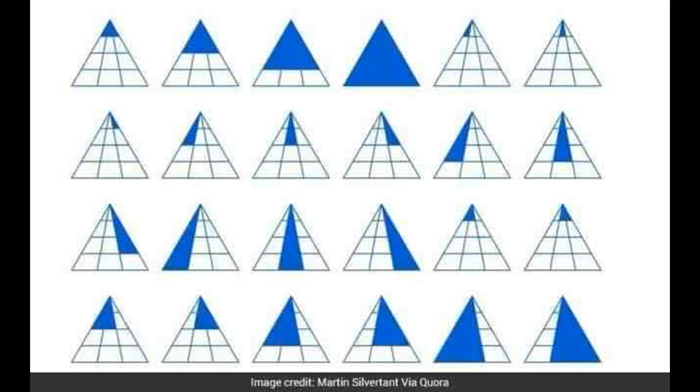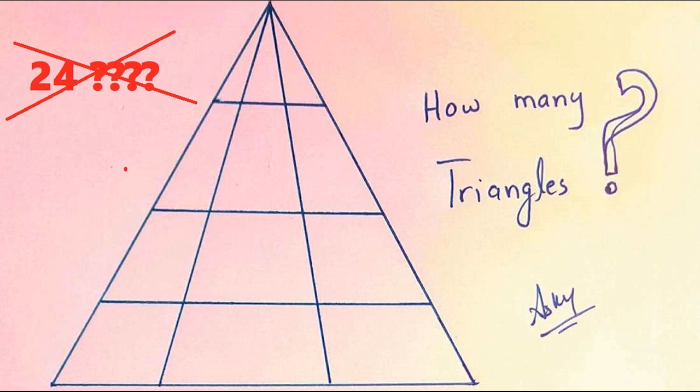But it's not the correct answer. The correct answer of this puzzle is 25. The 25th triangle is hidden in the A in the artist signature.